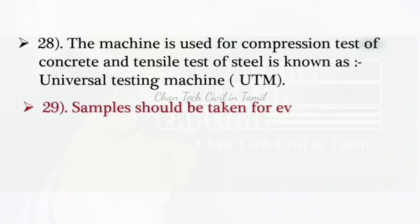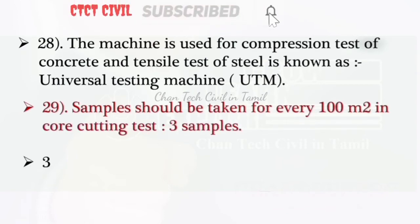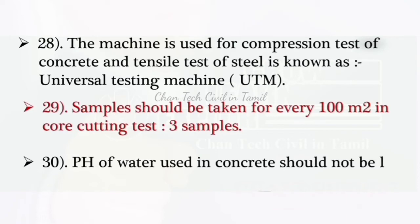Sample should be taken for every 100 m² in core cutting test, 3 samples. pH of water used in concrete should not be less than 6.